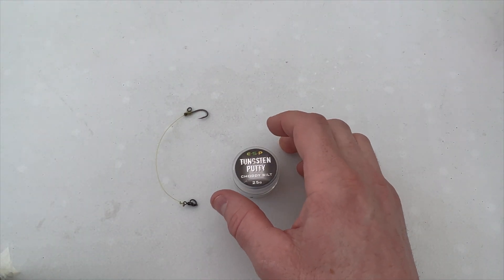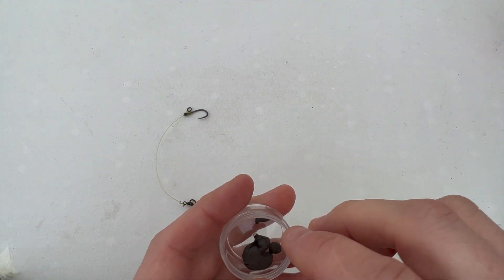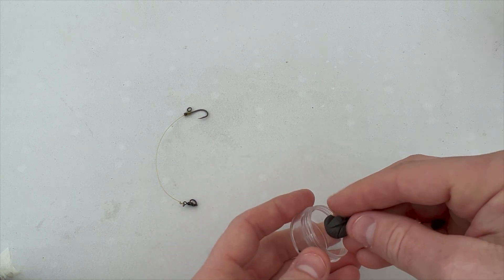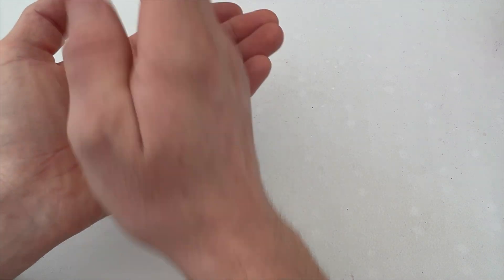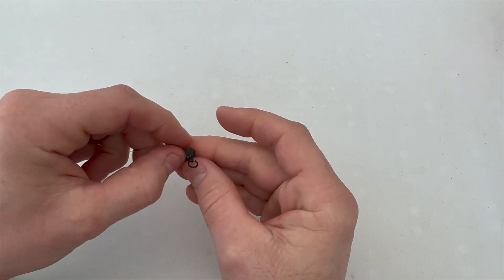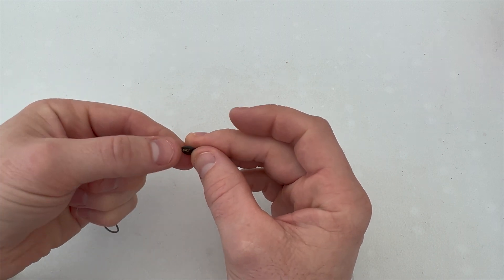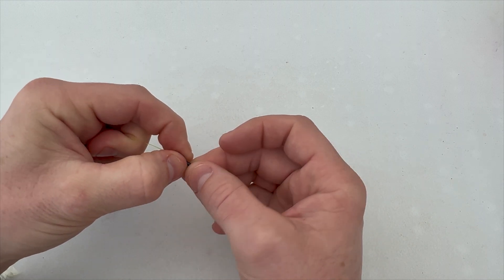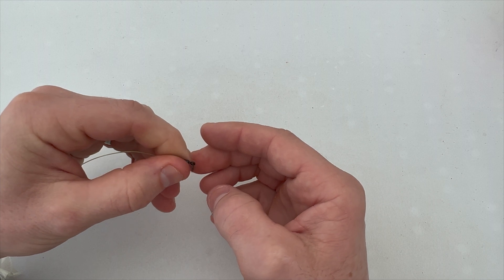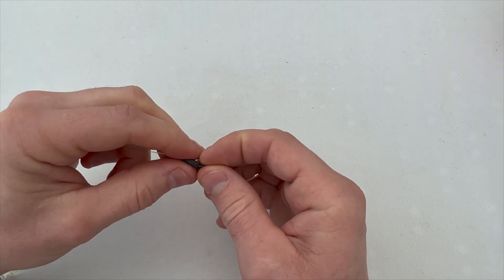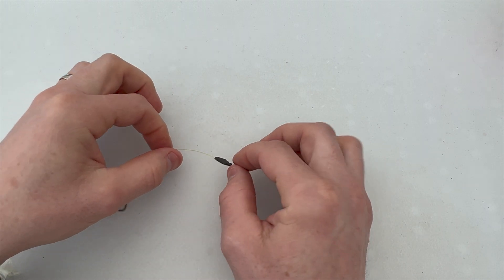Now we want to take some putty to help balance our hook bait. Little piece out here on one side, just roll it around your hands to warm it up, and we can attach that to the bottom of our swivel around that blood knot will help secure it, and just create a little barrel like that.